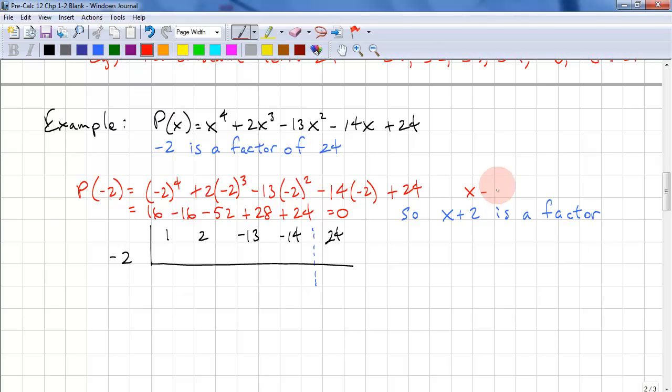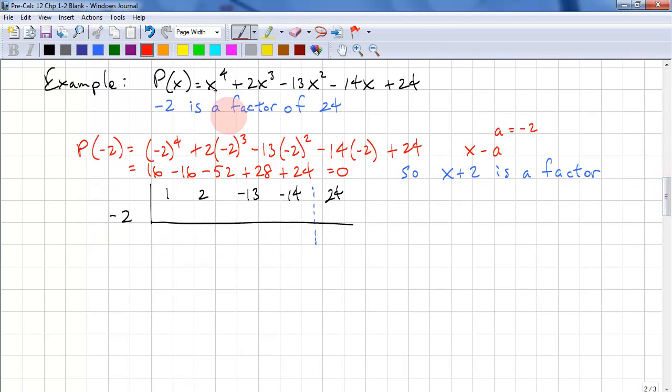And in terms of x minus a, a in this case is negative 2. So negative 2 is what we put out here. We copy down the coefficients: 1, 2, negative 13, negative 14, 24. Bring down the 1. Negative 2 times 1 is negative 2, and 2 minus 2 is 0. Negative 2 times 0 is 0, and negative 13. Negative 2 times negative 13 is 26. 26 minus 14 is 12.